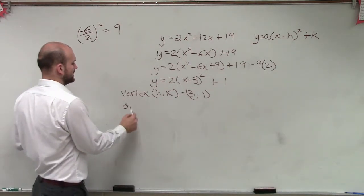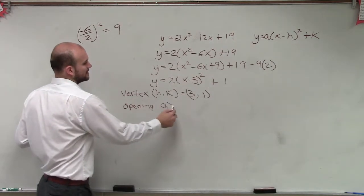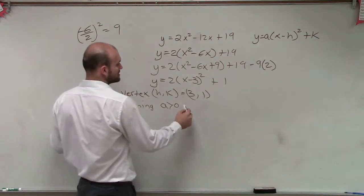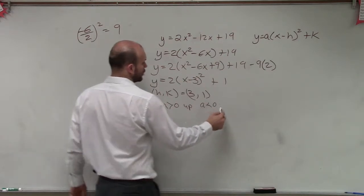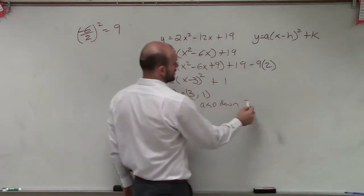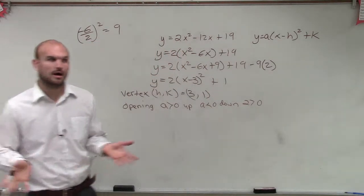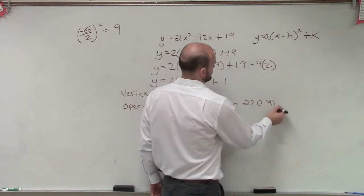Then we determine the opening. And remember, the opening, if a is greater than 0, it opens up. And if a is less than 0, it opens down. So in this case, we have 2 and 2 is greater than 0, so therefore, my graph opens up.